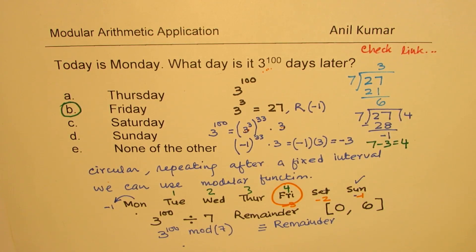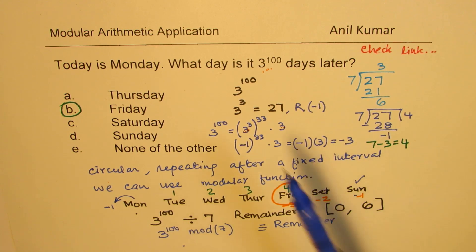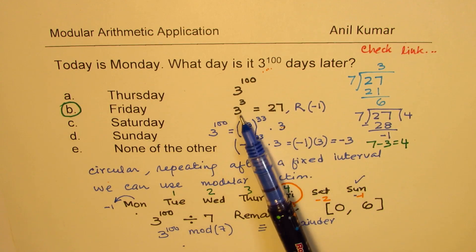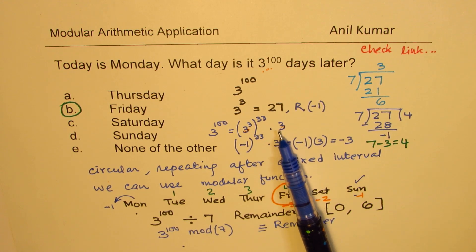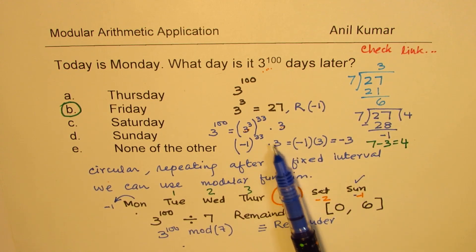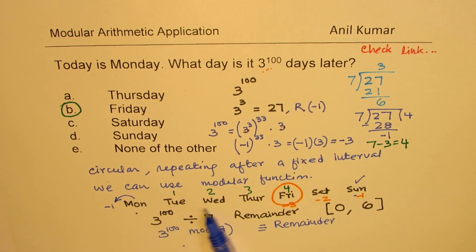So what we did was take three to the power of 100 as three to the power of three to the power of 33, times three — which is 99 times three, equaling 100. We know the remainder for three to the power of three is minus one. To the power of 33, it is still minus one. Minus one times three is minus three. Go back three steps and we land on Friday. That is our answer.